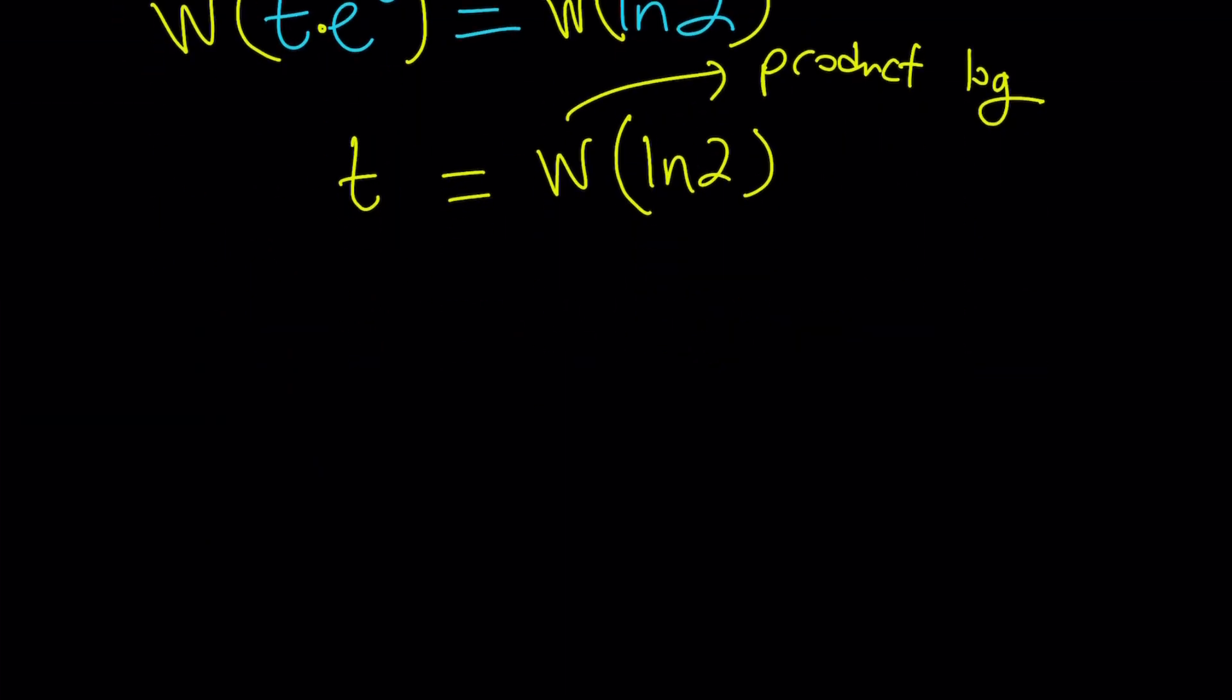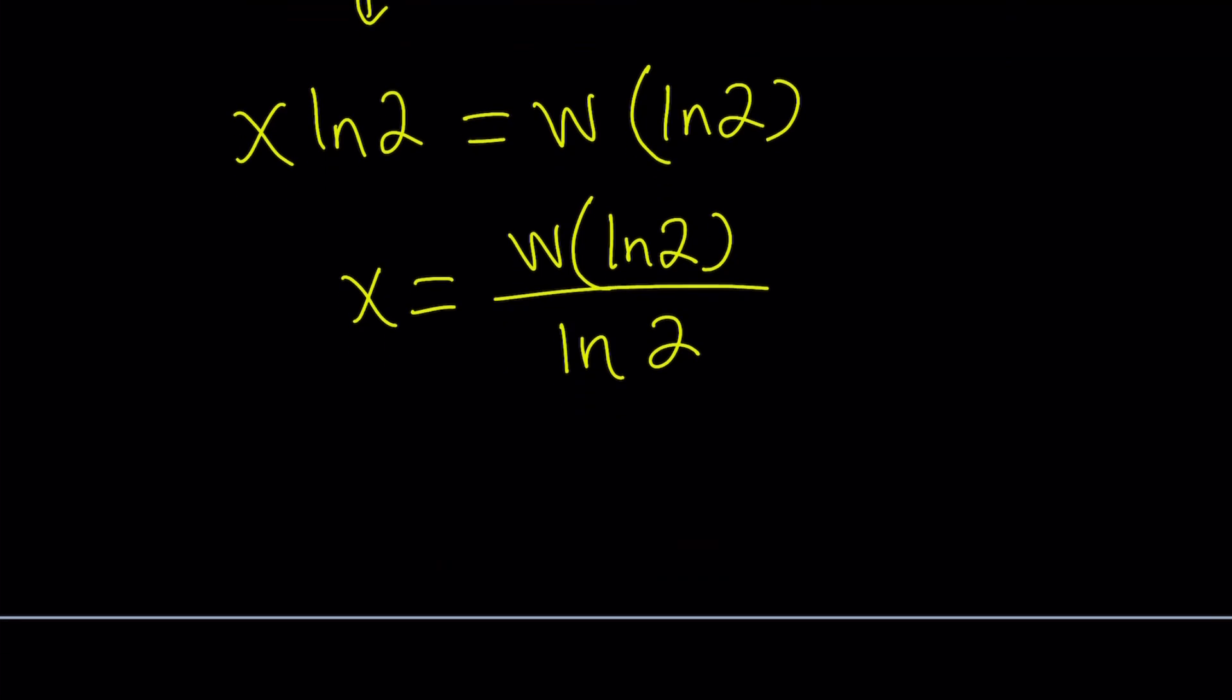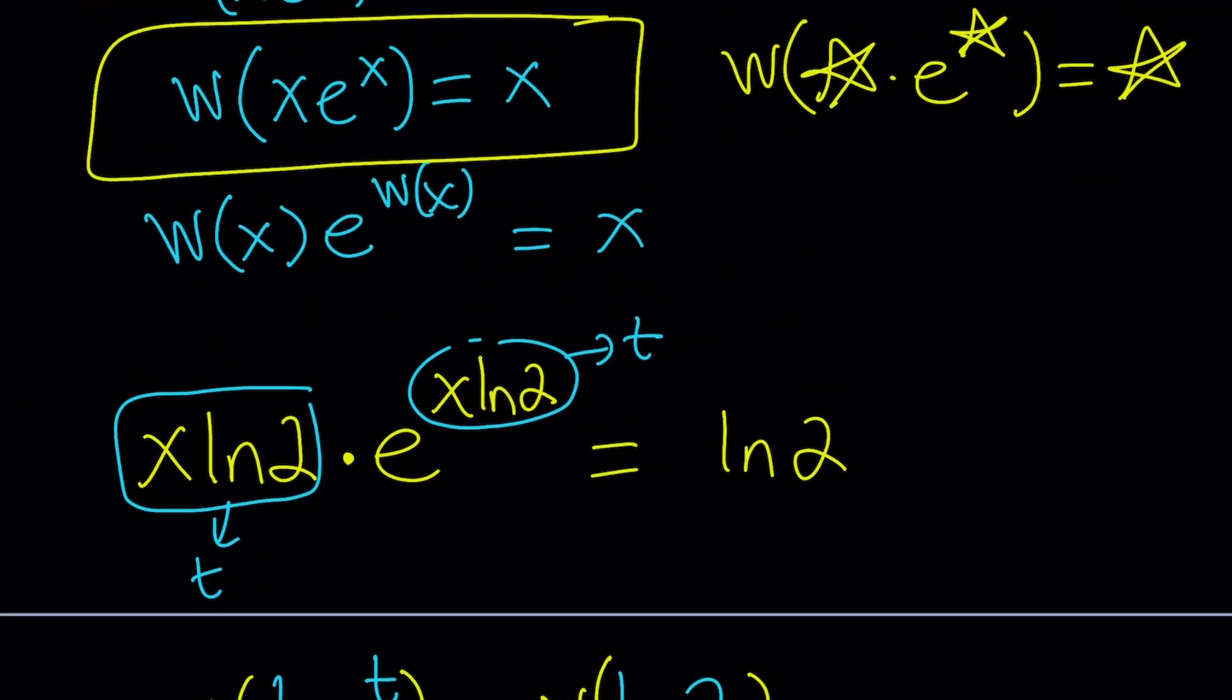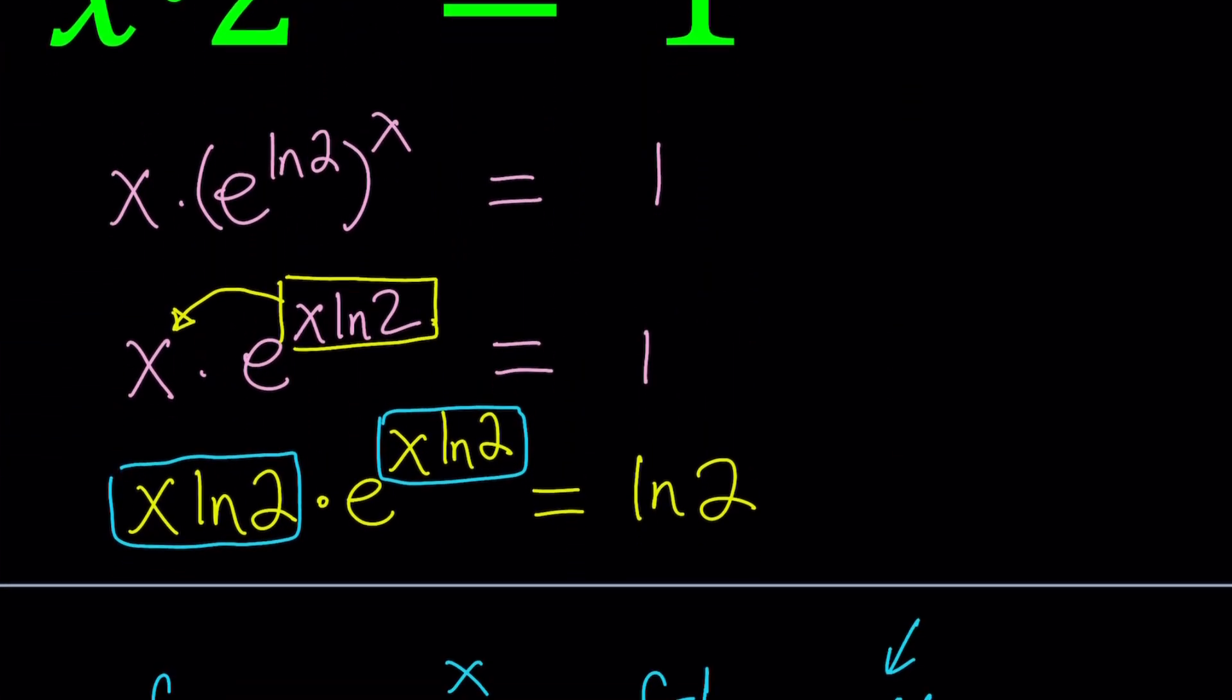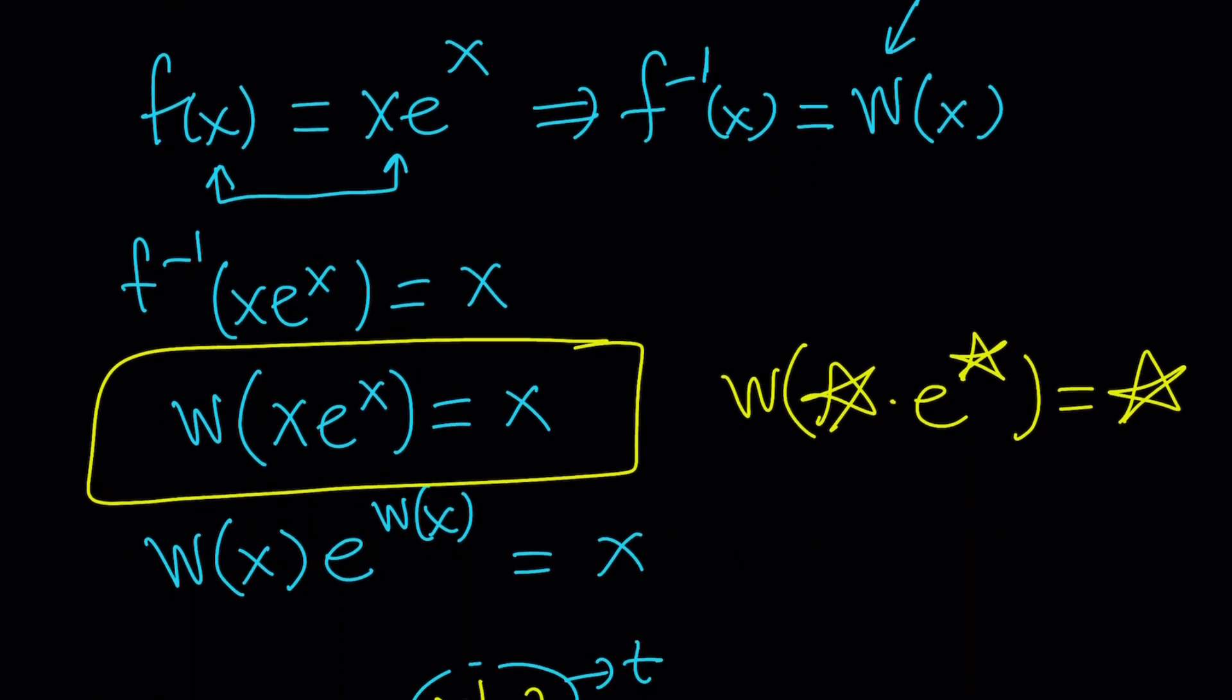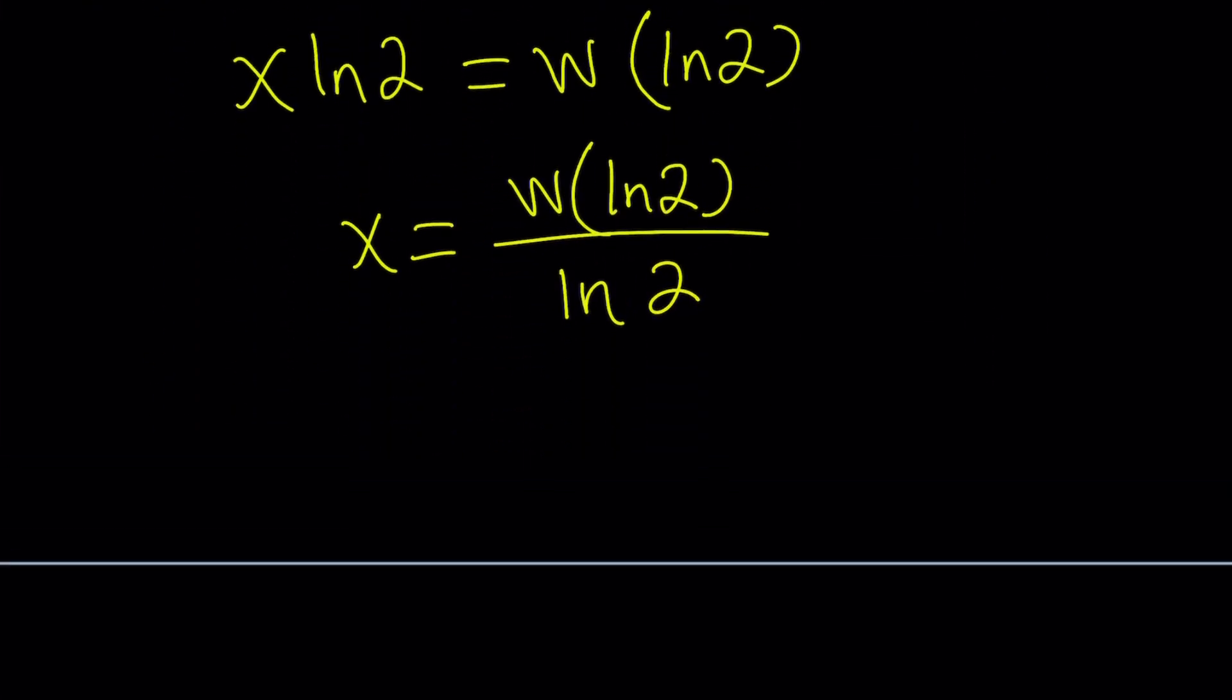If you replace T with x ln 2, we can get the x value from here. So it can be written as x equals W(ln 2), which is Lambert's W, divided by ln 2. So you could also generalize this if you have something like x times a to the x equals 1. Then a will just replace the 2 here. So that is the solution.